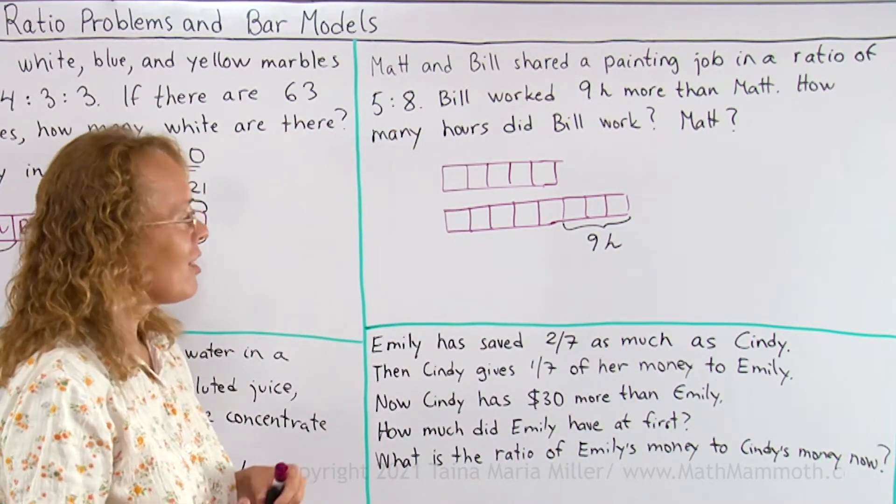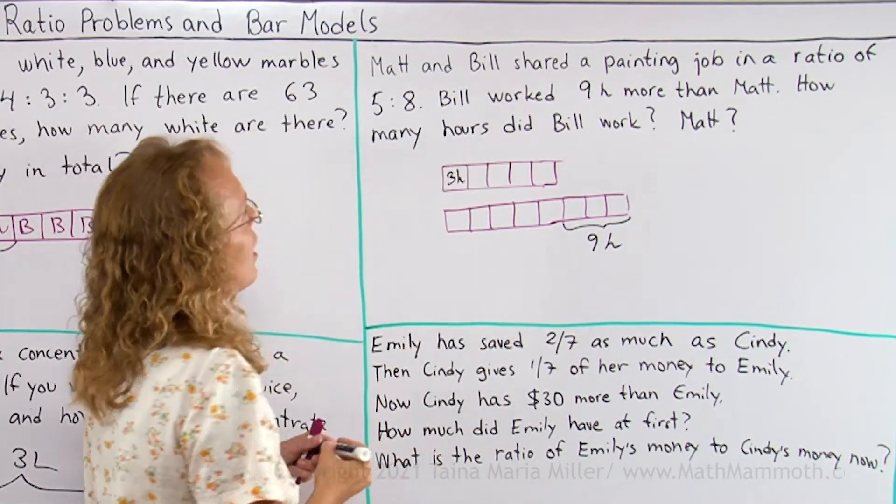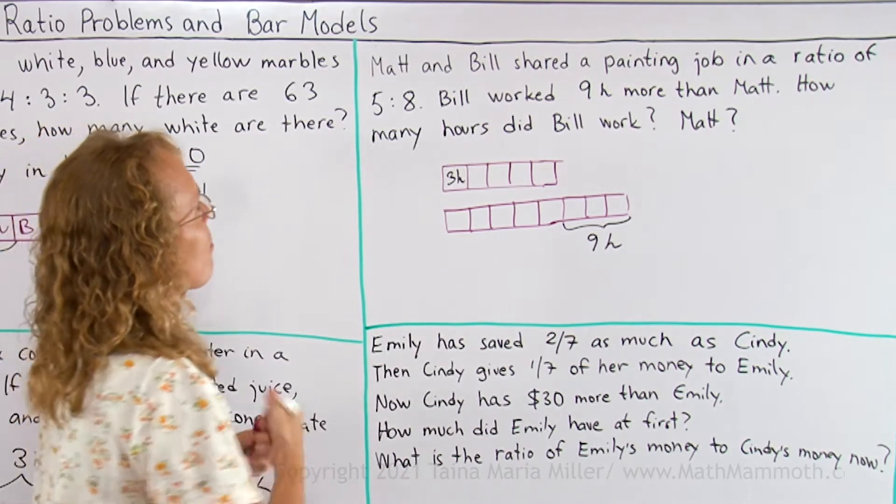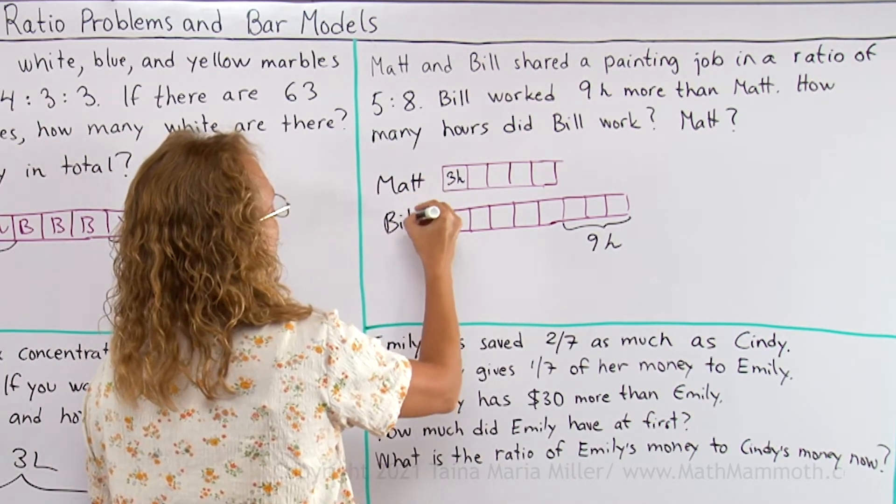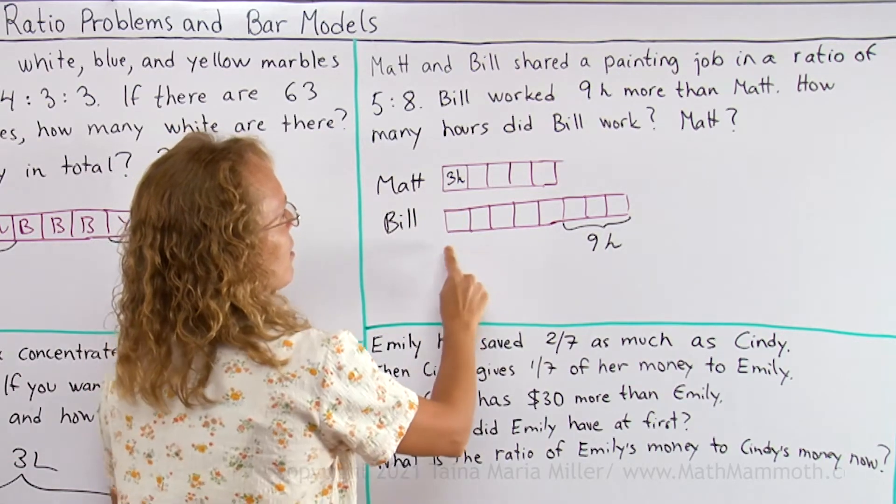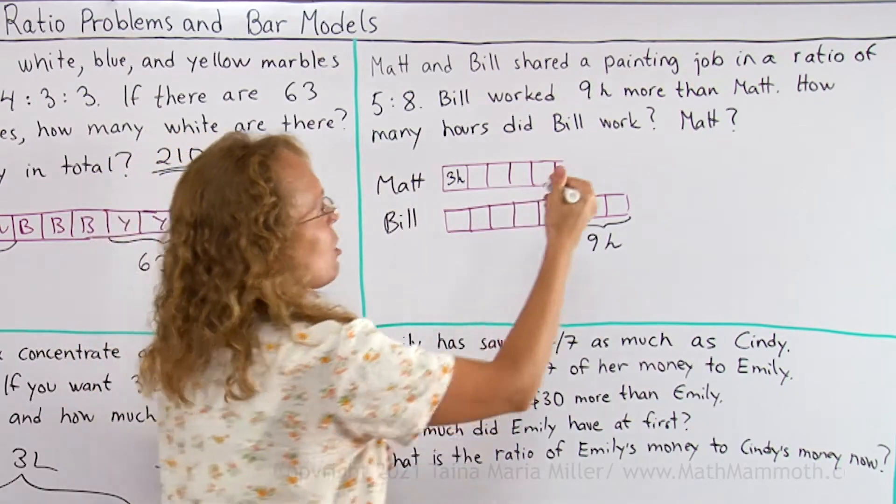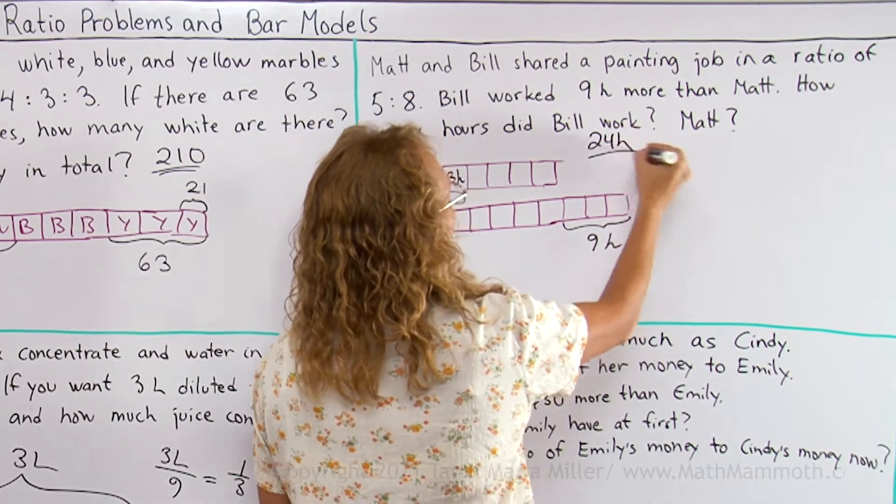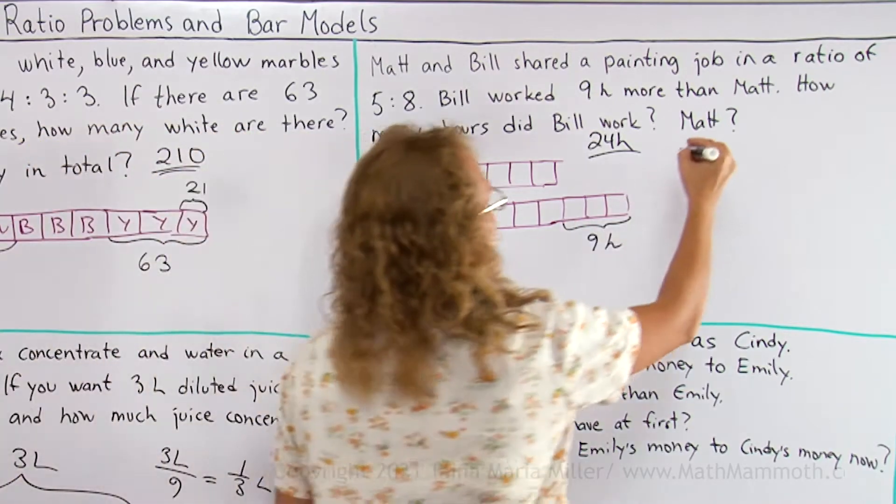So now it's easy to see that one block must represent 3 hours here. And how many hours did Bill work? Let me put here Matt and Bill. Now Bill worked, he has 8 of these blocks, 8 times 3 hours, so 24 hours. And Matt worked 5 times 3 hours, or 15 hours.